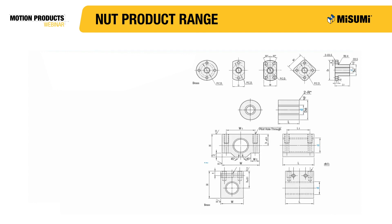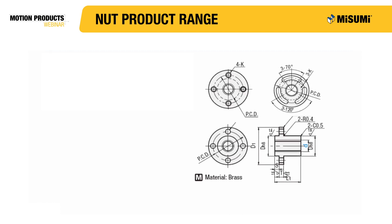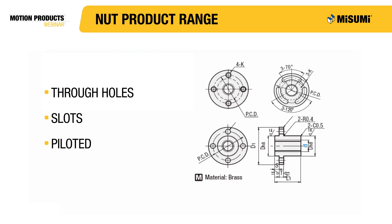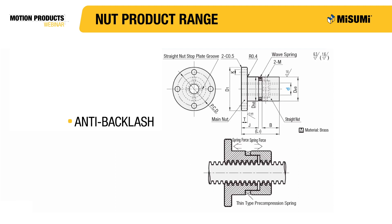As for nuts, Misumi carries a couple of different styles. They carry flange nuts where mounting holes are parallel with the shaft — the flange can be round, square, or compact shaped. They carry straight nuts and pillow block style nuts where the mounting holes are perpendicular to the shaft. For the flange nuts, there are versions with through holes or slots, and a version where the flange is offset from the end. For applications where backlash is a concern, they carry an anti-backlash nut. This nut consists of two sections that are spring-loaded against each other, resulting in the nut threads always resting against one side of the screw threads, eliminating backlash.